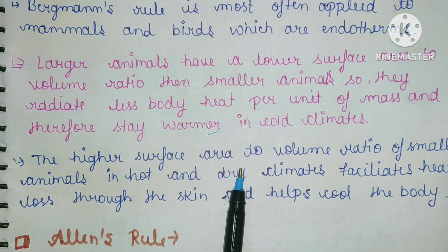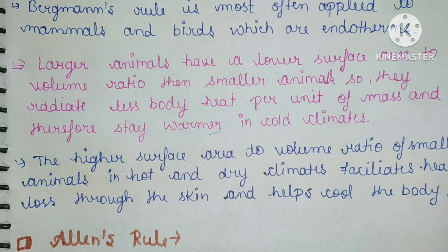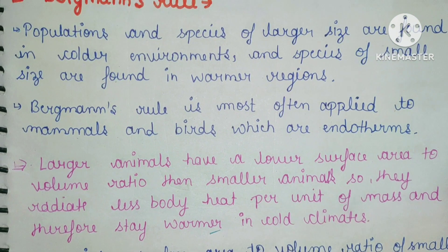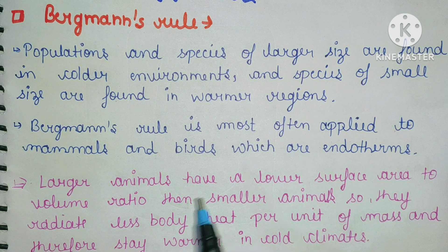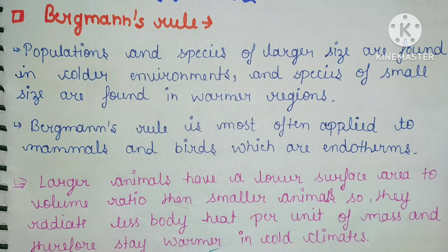The higher surface area to volume ratio of smaller animals in hot and dry climates facilitates heat loss through the skin and helps cool the body. In summary: large-sized species or populations are found in cold environments, and small-sized ones are found in warmer regions.